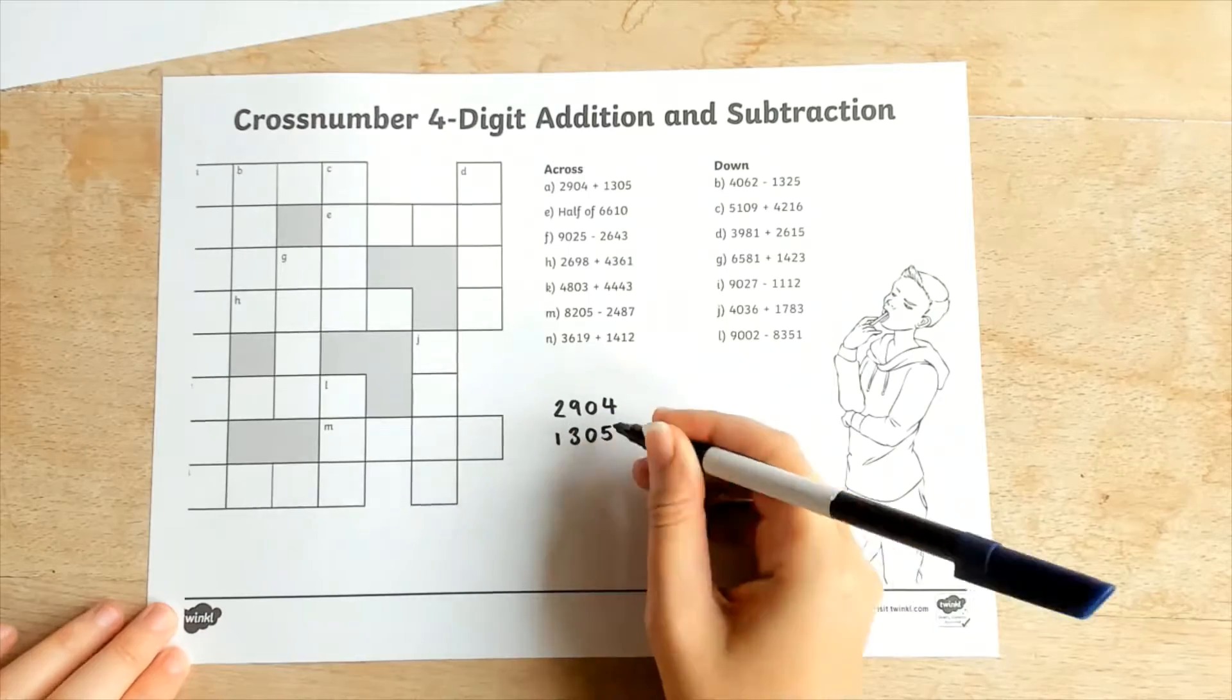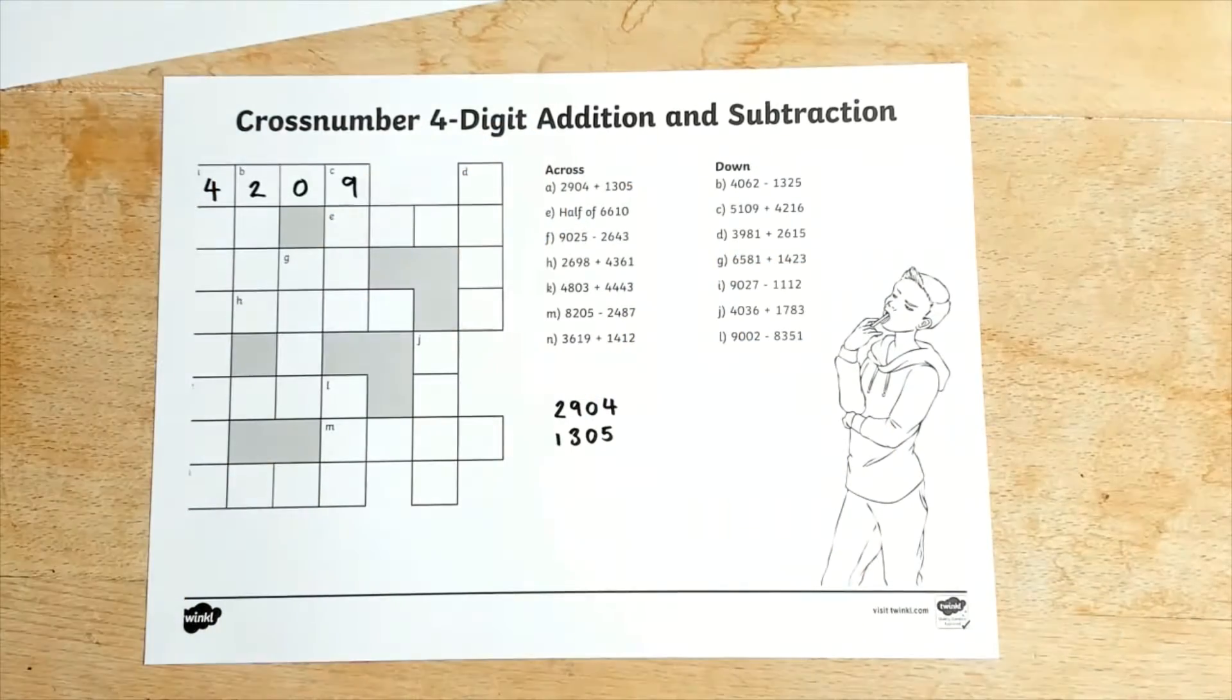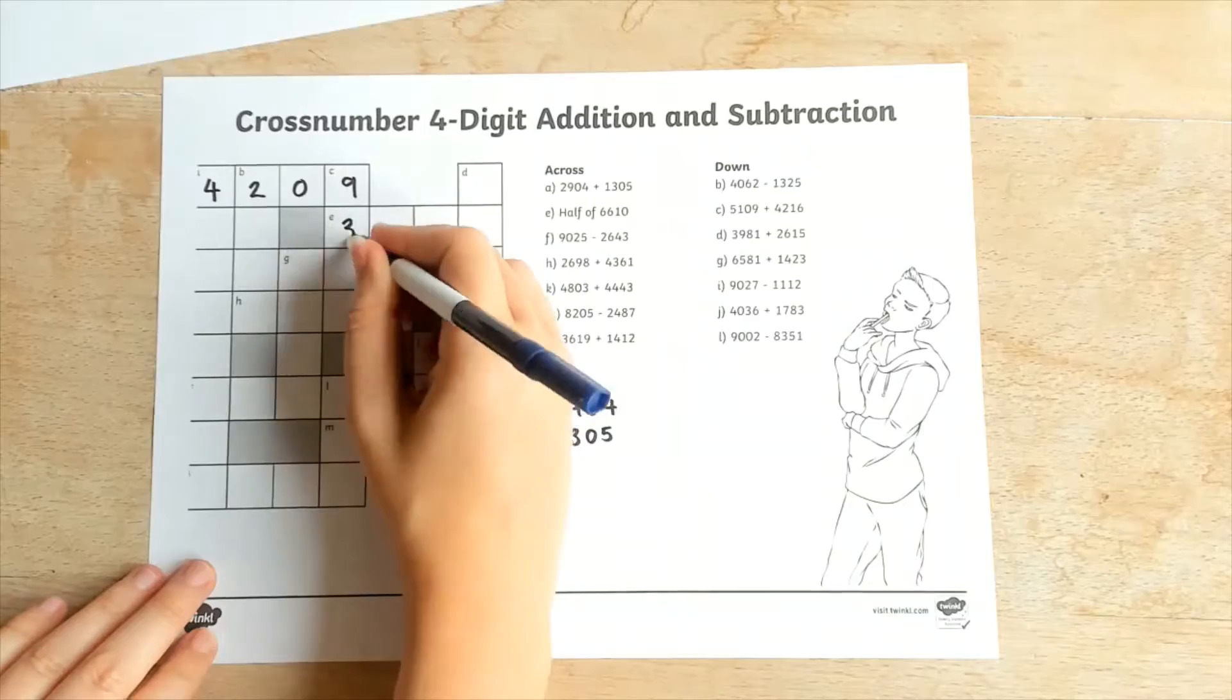Learners should read the clues and complete the calculations to find the correct answer. They then add it into their cross number puzzle grid.